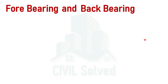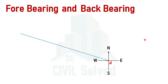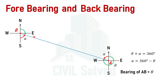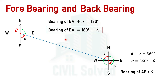Finally, for a line lying in the northwest quadrant, with starting point A and ending point B, the bearing of AB is theta and we want to find the bearing of BA. Let the angle from south to the BA line be alpha. Using the geometric concept, the corresponding angle is also alpha. The addition of theta and alpha equals 360 degrees, so alpha equals 360 minus theta. Then, the bearing of BA plus alpha equals 180 degrees, so the bearing of BA equals 180 minus alpha.